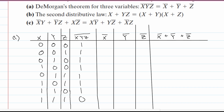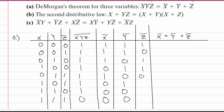For x-not, we look at the x column and rewrite everything as the opposite: one, one, one, zero, one, zero, zero, zero. For y-not, we have: one, one, zero, one, zero, one, zero, zero. And lastly, for z-not, we have: one, zero, one, one, zero, zero, one, zero.